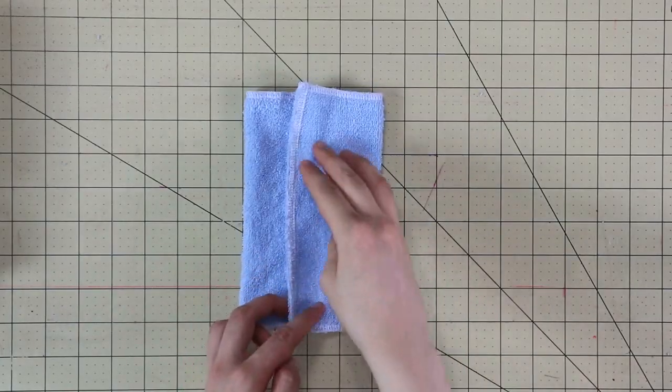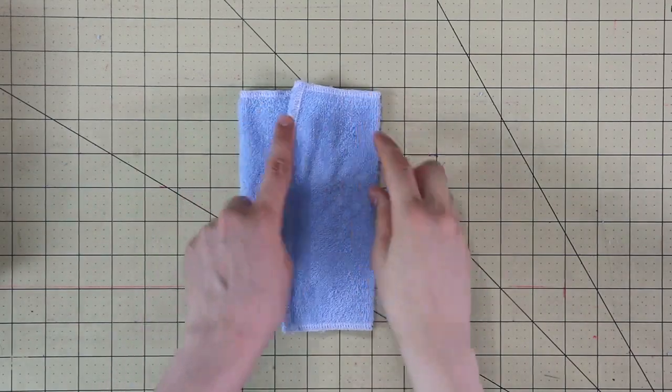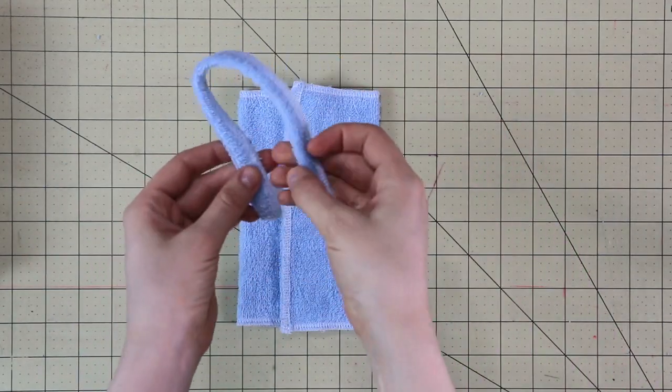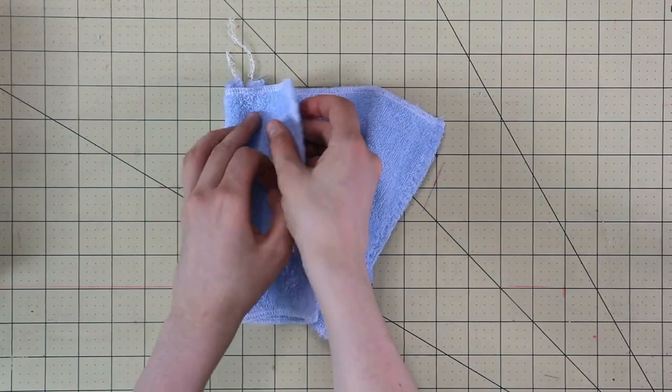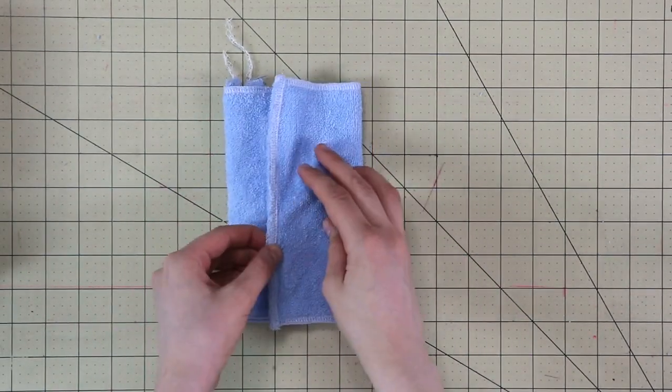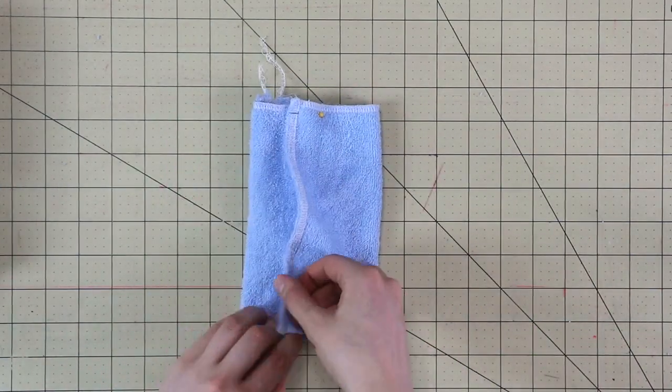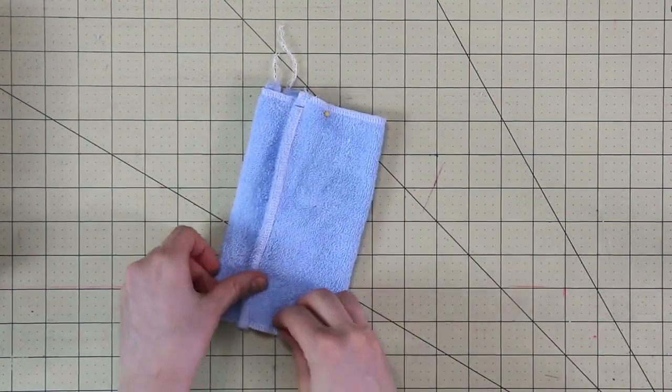Now fold your rectangle like a tri-fold pamphlet but make sure that the short edges that will meet in the middle overlap by a tiny bit. Don't forget to insert the handle in the left upper corner. Pin everything together and let's stitch it with a sewing machine.